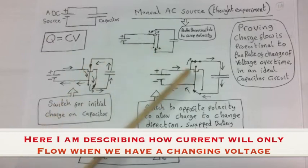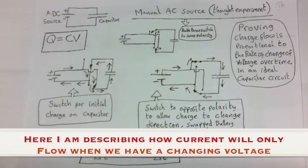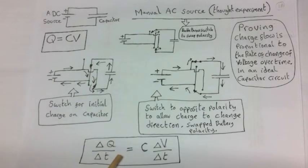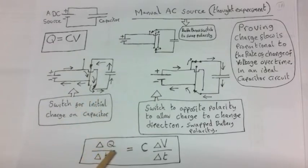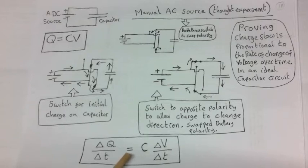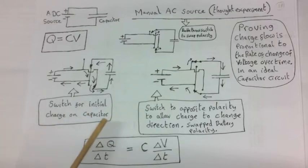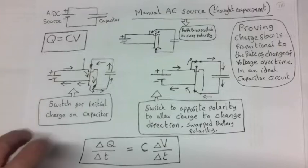If we flick this switch on and off 30 times a second, we're going to have more charge flowing than if we flick it only 5 times a second. Derived from Q=CV, if the voltage is changing more rapidly — say 30 times per second as opposed to 5 — the charges moving back and forth will do so more often, meaning the current will be larger. The relationship between current and the change in voltage over time is what's important in a capacitor circuit. The amount of charge that moves in a unit of time is simply the definition of current.